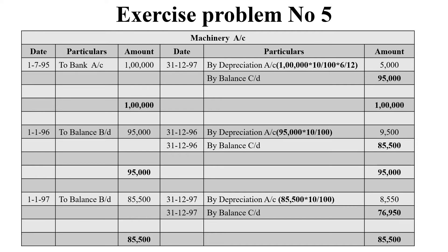The 6 months are July, August, September, October, November, and December — so we use 6/12. That gives depreciation of 5,000 rupees. The balancing figure is 95,000, which is brought down to the next year as the opening balance for 1996.